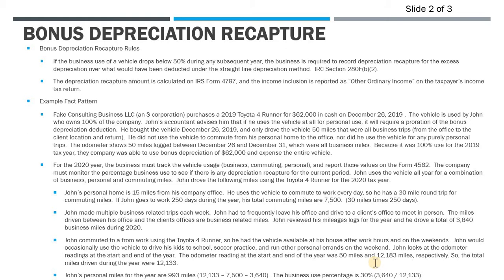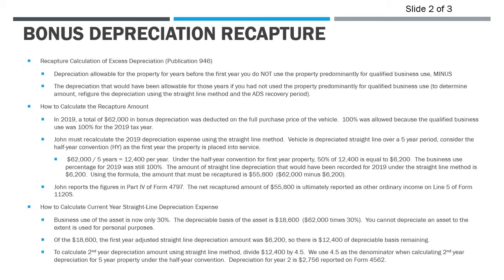Immediately, this is the problem — business use fell below 50%, so now we've got a recapture issue. This is a very common fact pattern: a lot of business owners use that company car more for personal use and commuting than they think. You have to track these amounts and be compliant with federal tax rules, or if you're ever audited, you're going to be in serious trouble.